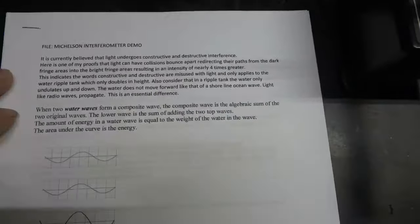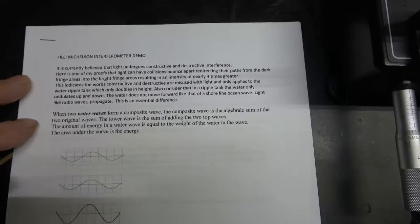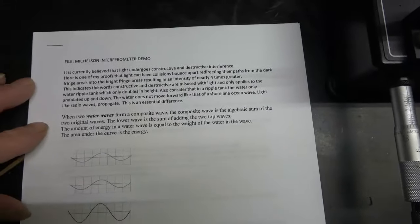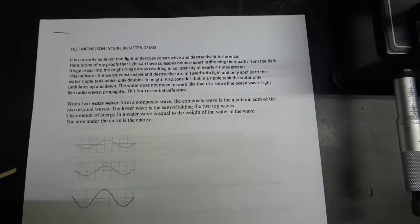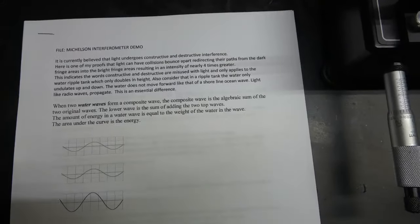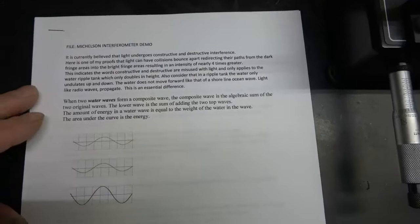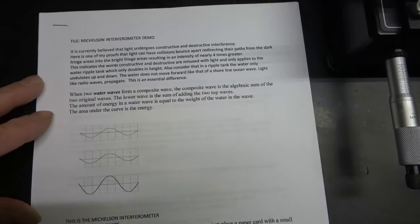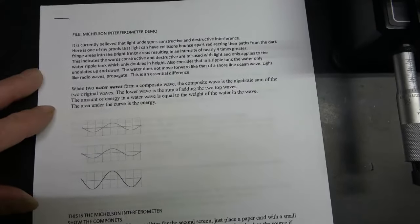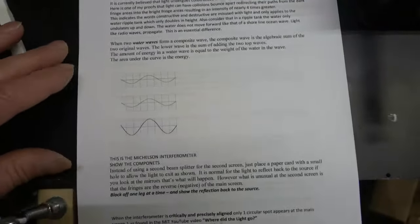When two water waves form a composite wave, the composite wave is the algebraic sum of the two original waves. The lower wave is the sum of adding the two top waves. The amount of energy of a water wave is equal to the weight of the water in the wave. The area under the curve is the energy.